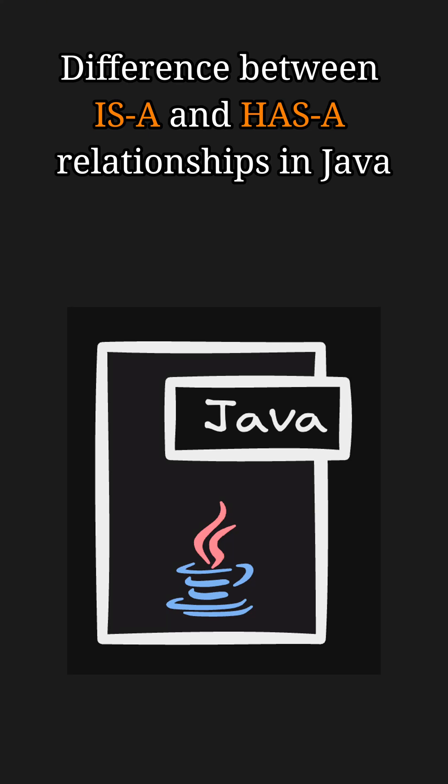Hey, everyone. Welcome back to another Java short video. Today's topic is: what is the difference between is-a and has-a relationships in Java? Let's break it down.